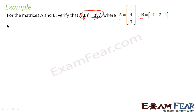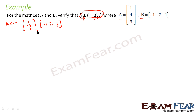Let us first find AB. AB is nothing but you multiply [1, -4, 3] with [-1, 2, 1]. Before multiplying, let us check whether multiplication is possible or not. 1×3 horizontal row, 1 vertical — this is a 3×1 matrix. 1 horizontal, 3 vertical — this is a 1×3 matrix. 1 and 1 matches, that means yes you can multiply, and the final output will be a 3×3 matrix.